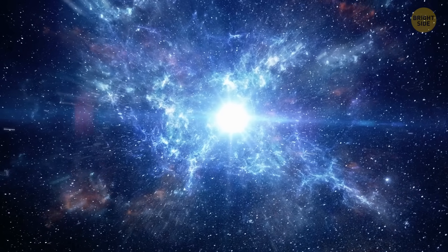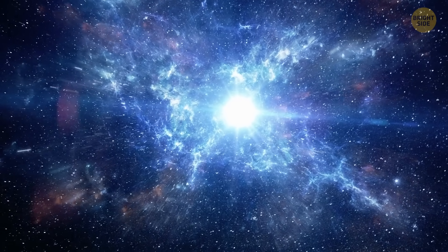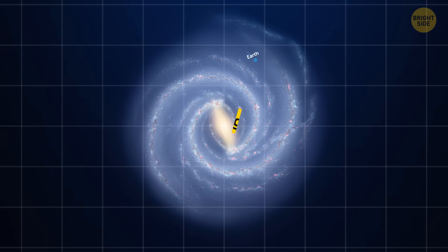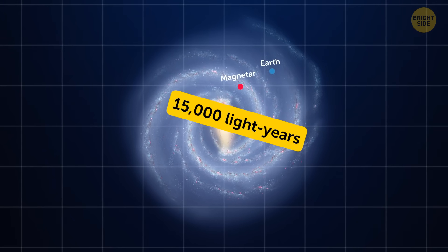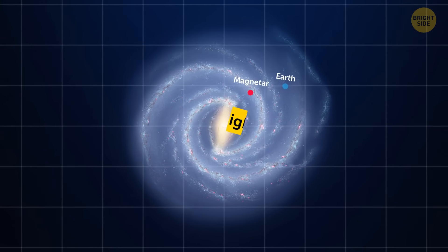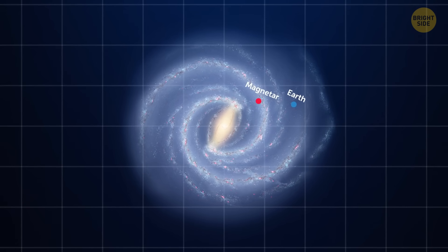Luckily, this magnetar is very far away and not coming near us. When it was first discovered, it was about 15,000 light years away from Earth. That's a huge distance. So, you don't get to worry about your atoms being disconnected yet.